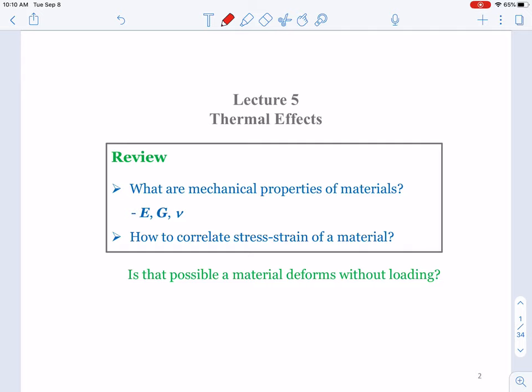Using these parameters, we can correlate the stress and strain of a material. Those are known as Hooke's Law. If you look at normal stress and strain, our normal stress σ can be calculated from E times normal strain, and our shear stress can be calculated from G times shear strain. Those are the basic Hooke's Laws.